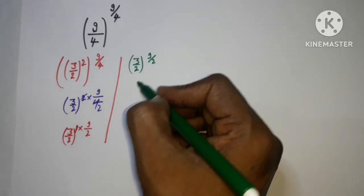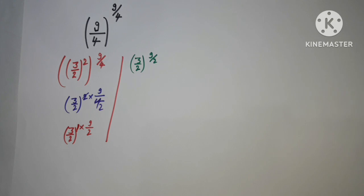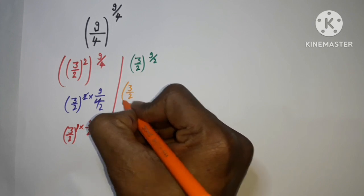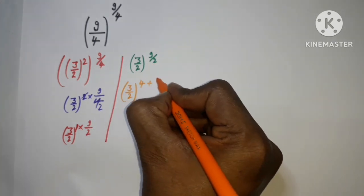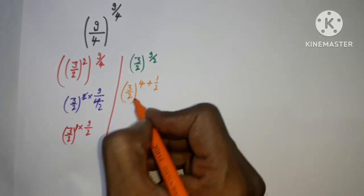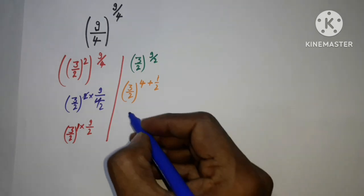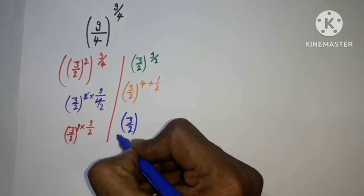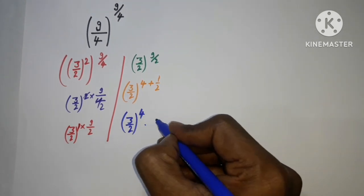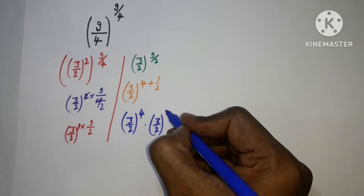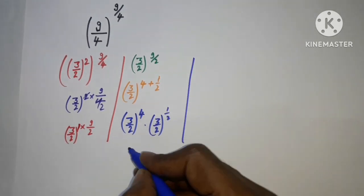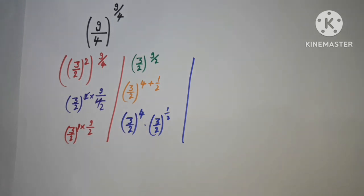Next, 9 by 2 can be written as a sum of fractions: 4 plus 1 upon 2. Since 4 times 2 is 8, and 8 plus 1 is 9, we can write the power as 4 plus 1/2. We then separate these terms using the property of exponents, giving us (3/2)⁴ multiplied by (3/2)^(1/2).